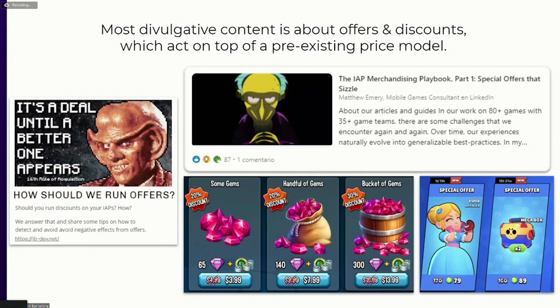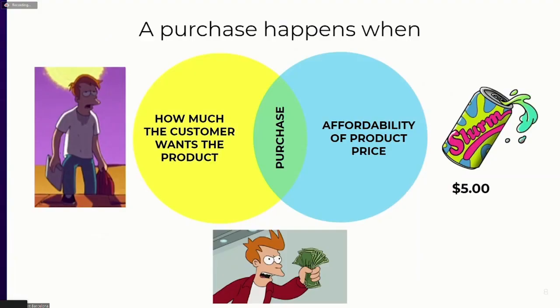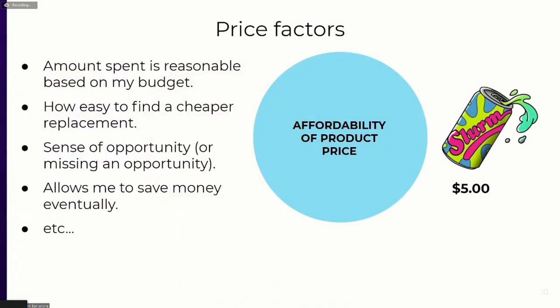Before we start, I want to introduce a couple of basic concepts. If there are prices, it means there are purchases. A purchase has two main factors: one related to desire — how much the customer wants the product — and another related to affordability, or the price itself. When those two bubbles intersect, that's when a purchase happens.